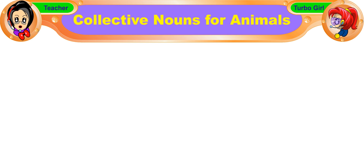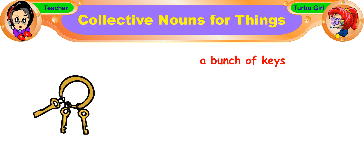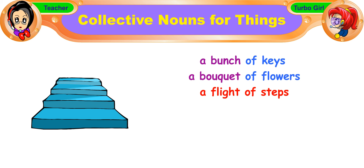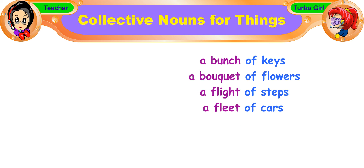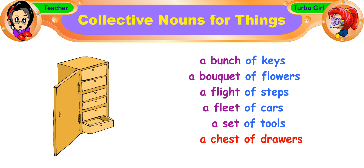And these are some collective nouns for things: a bunch of keys, a bouquet of flowers, a flight of steps, a fleet of cars, a set of tools, a chest of drawers.